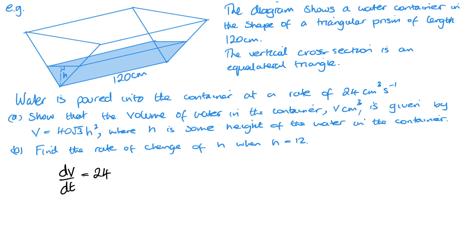Show that the volume of water in the container, V cubed, is given by this formula, where H is some height of the water in the container. So we need to find the volume of the container in terms of H, and to do that, it needs to be the area of the cross section times the length, as it's a prism.